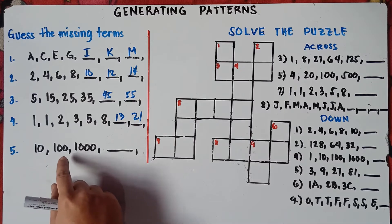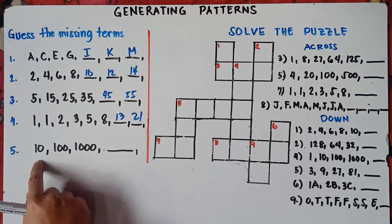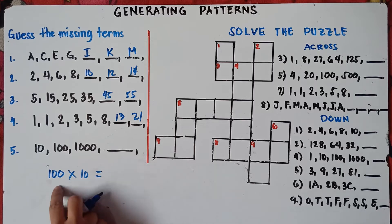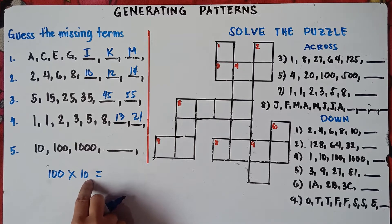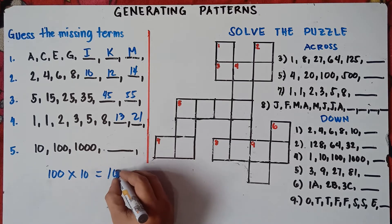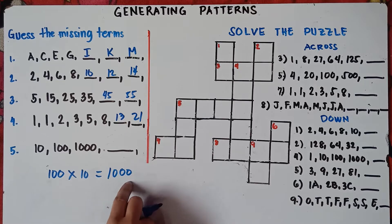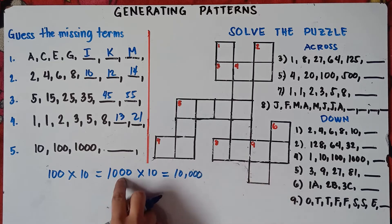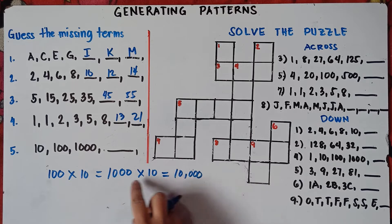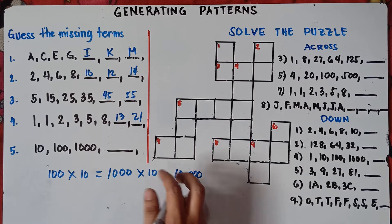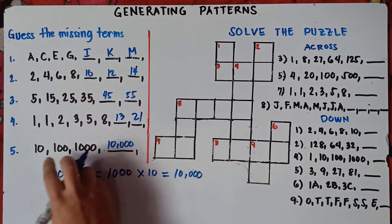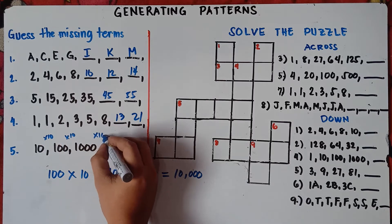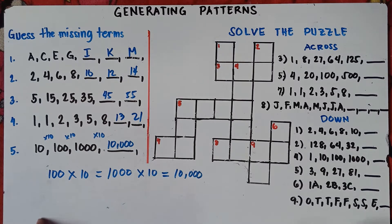Number 5: 10, 100, 1000. What do you do to 10 to make it 100? You multiply it by 10. When you multiply a number by 10, you just add a zero. So 10 times 10 is 100, 100 times 10 is 1,000, and 1,000 times 10 is 10,000. That's the answer for number 5.